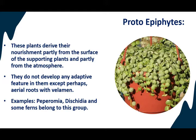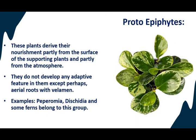The first is proto-epiphyte. Proto means primitive. These plants derive their nutrition partly from the surface of the supporting plant and partly from the atmosphere. They do not develop any adaptive features in them, except perhaps for the aerial roots with velamen tissue. Examples are Peperomia, whose image is towards the right — one of the most common ornamental plants — and Dysteria, also an ornamental plant. Even some ferns belong to this group.